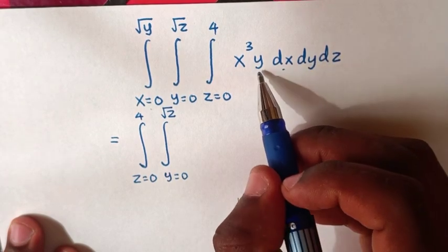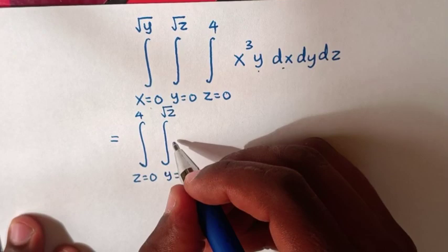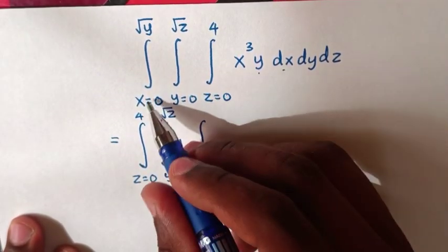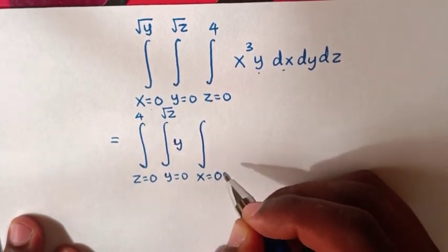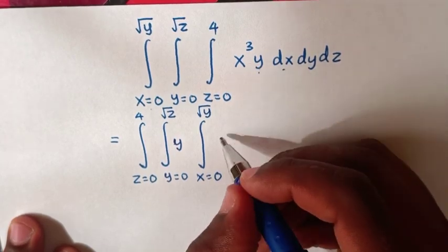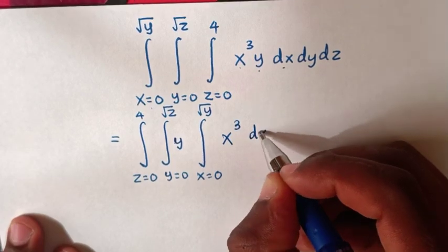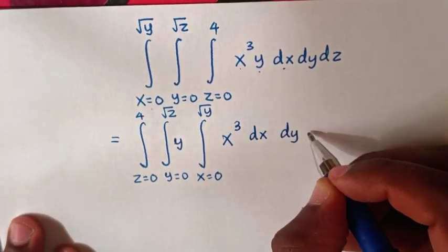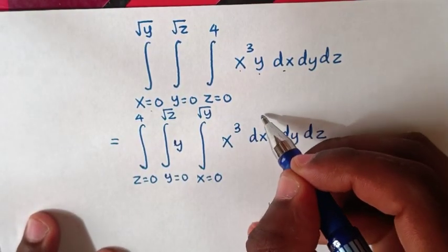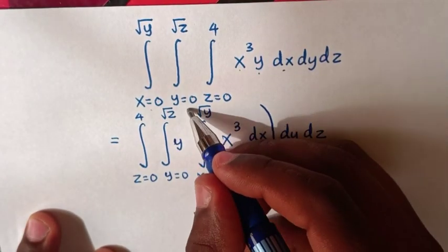With respect to dy we will integrate this y, so this y will be written here. We write y and then integrate with respect to dx from x equals 0 up to square root of y. So here it will be x³ dx, then dy, then dz. When we integrate with respect to dx, we will put the brackets in here.